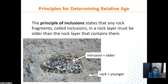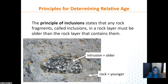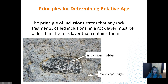The principle of inclusion states that any rock fragment or inclusion in a rock layer must be older than the rock layer that contains it. If magma flowed over an area and included something, that inclusion had to be older. Think of chocolate chips in a cookie — the chocolate chips are older than the cookie itself. This rock had to have been made before the magma flowed over it. Some rocks have higher melting temperatures so the magma flows over but doesn't melt them.